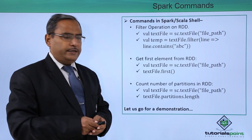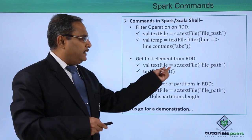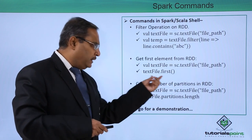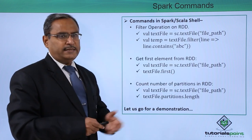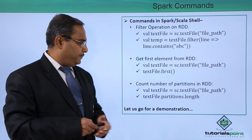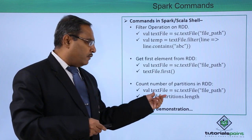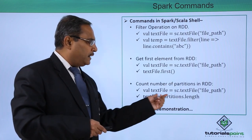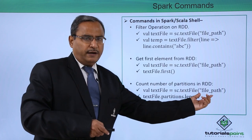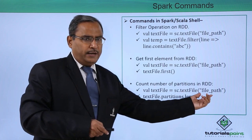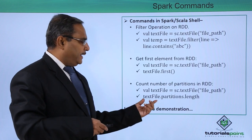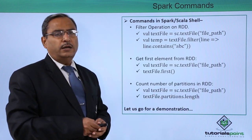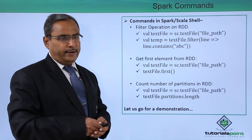To get the first element from an RDD: val textFile = sc.textFile("file_path"), then textFile.first() — it will print the first element. To count the number of partitions: textFile.partitions.length, which gives the count of partitions in the RDD.